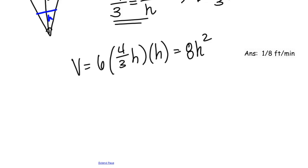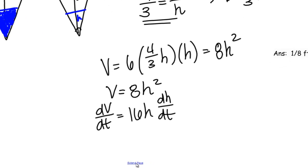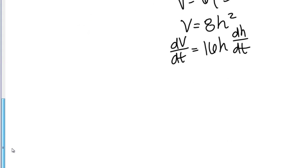Now I can proceed with the next step: take the derivative with respect to time, remembering to use the chain rule. Starting from V = 8H², the derivative of V with respect to time is dV/dt, and on the right side I get 16H · dH/dt. Since I'm looking for dH/dt, I'll solve for it: dH/dt equals (1 over 16H) times dV/dt.